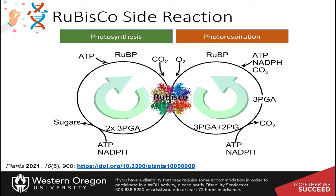Amazingly, this side reaction is actually very prevalent — approximately 25% of the reactions mediated by the Rubisco enzyme are the oxygenase pathway. This really reduces the efficiency of sugar production by about 25% in what we call C3 plants, which are plants that have the Calvin cycle as the main pathway of producing sugar molecules.